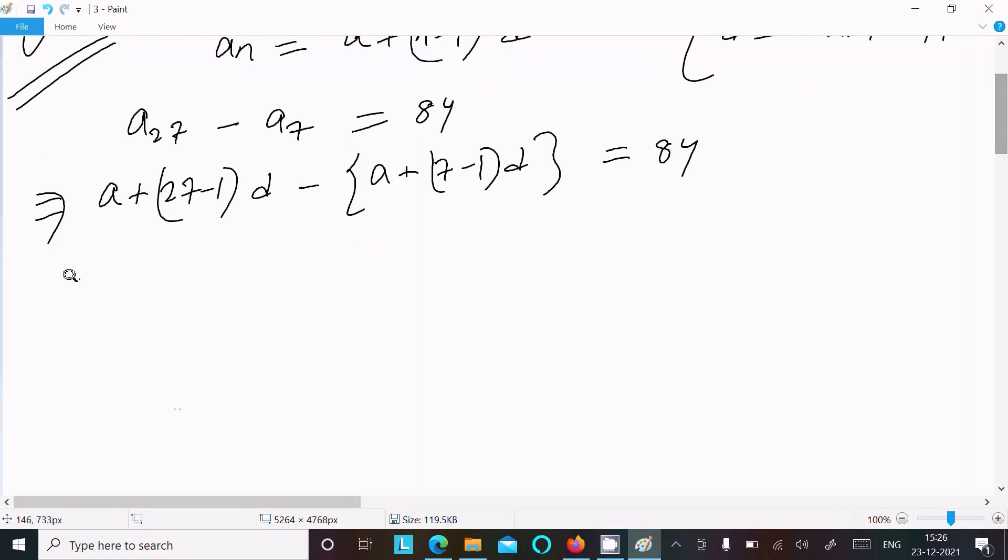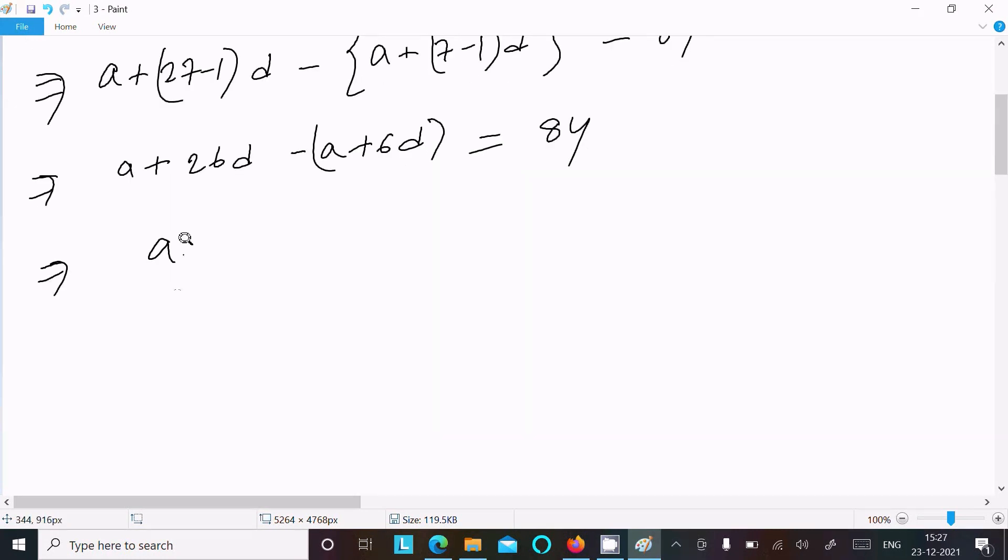After that here a plus 26d minus a minus 6d equals 84. The a cancels, and 26d minus 6d gives 20d equal to 84.